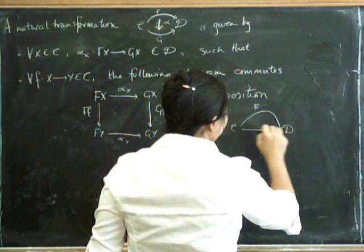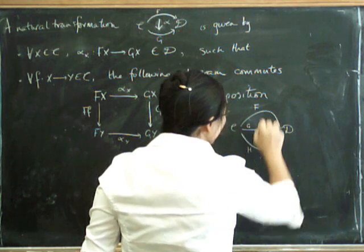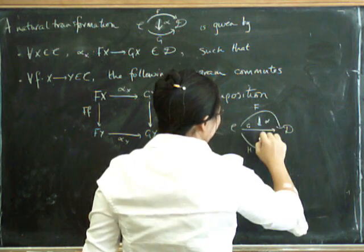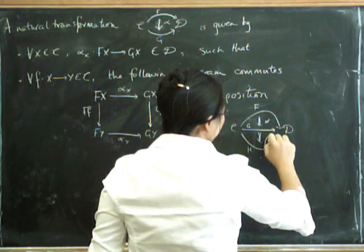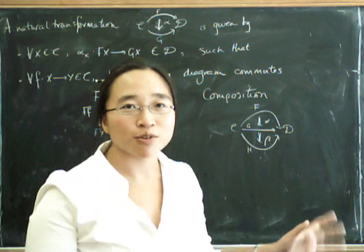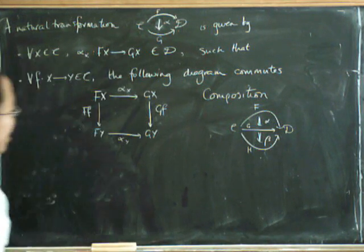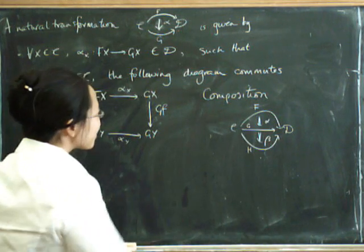If we've got a functor F, a functor G, and a functor H, and a natural transformation alpha like this, and a natural transformation beta like that, I'm now going in completely the opposite direction across the board from my co-Catster colleague in his string diagram lecture,